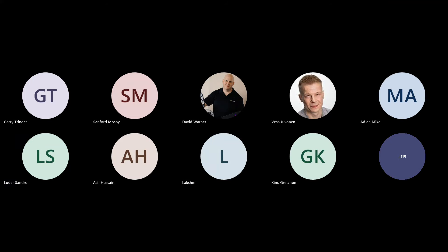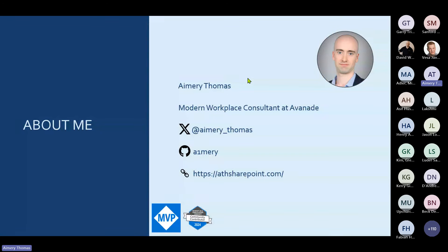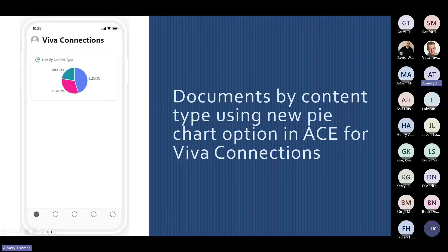Moving on to our final demo. Amory is going to show us the new pie chart option in Viva Connections. Hello everyone. My name is Amory Thomas. I'm a modern workplace consultant at Avanade, and I'm also an MVP for M365 development and SharePoint. Today I'm going to show a sample displaying documents by content type using the new pie chart option for ACEs in Viva Connections. I built this sample because it's a good example of how to use the new data visualization card options. Basically it displays a pie chart showing documents of a selected document library by content type, and you can select the source library from the property pane.